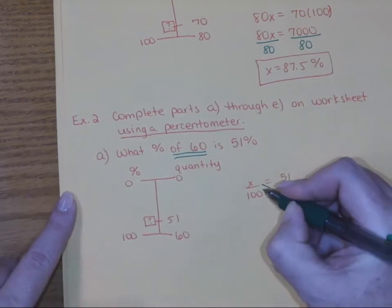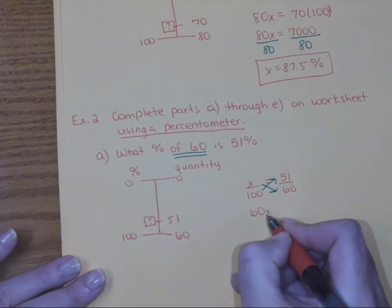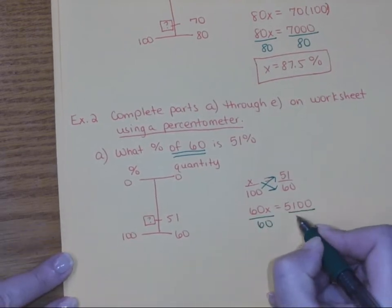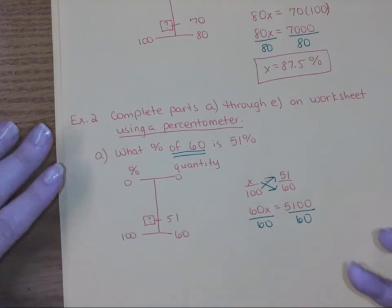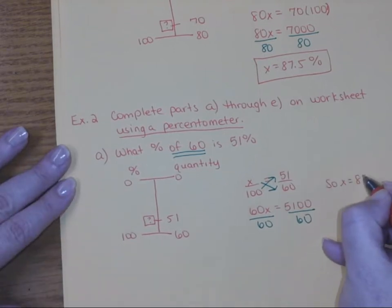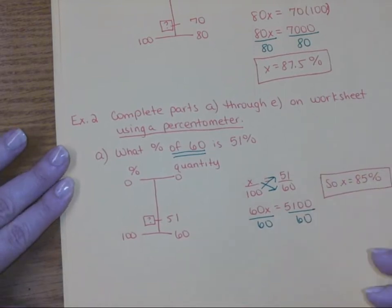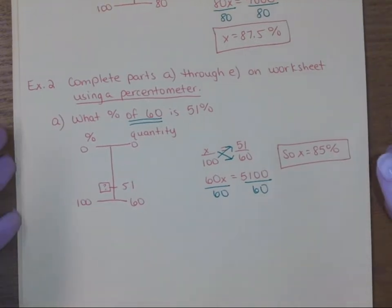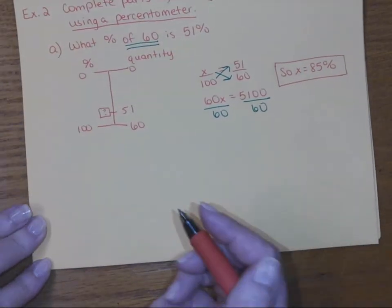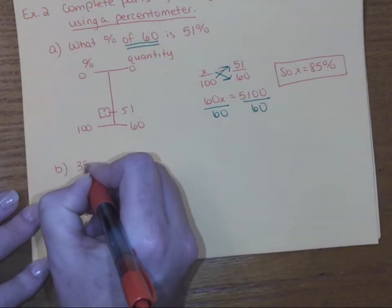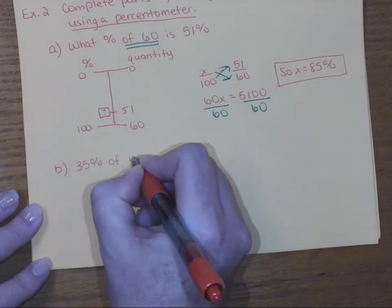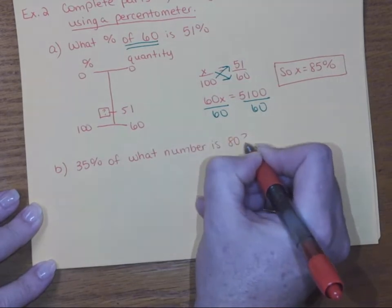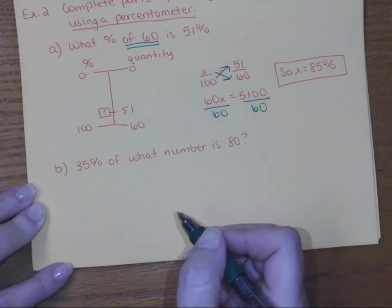We cross multiply — I just don't want you to cross multiply and divide in one step. So it's 60x equals 5100, then we divide by 60. The reason I don't want you to rush the steps is because it makes students too quick with the process. When they get to junior high and high school with rational functions, they really struggle. We want to teach them early that cross multiplication and division are separate steps.